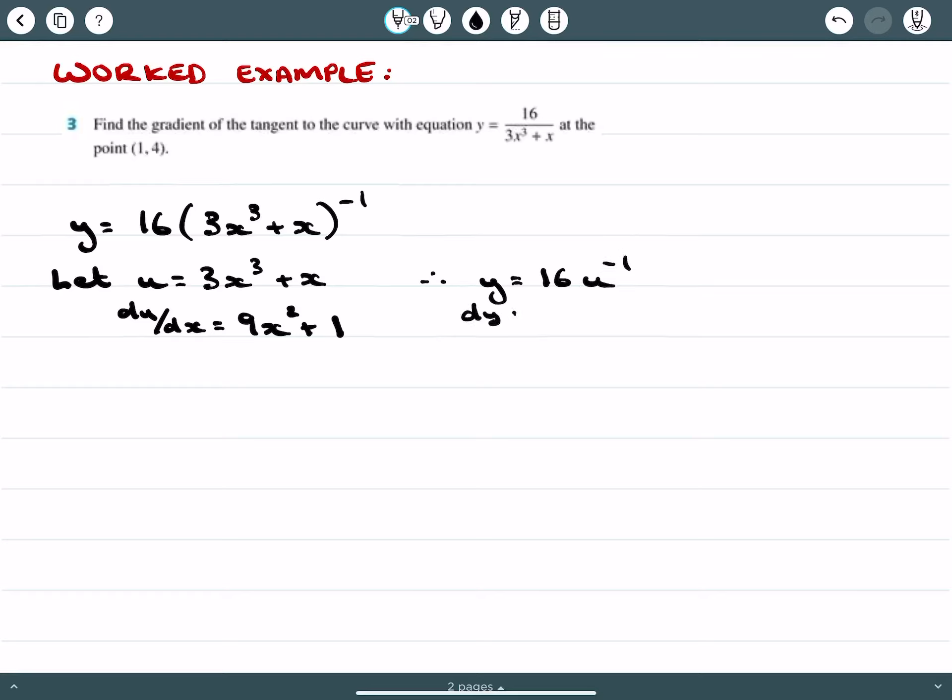If I resolve for dy/du, I get negative 16u to the negative 2, which I can rewrite in fractional form. Then I substitute u back in for 3x cubed plus x all squared.